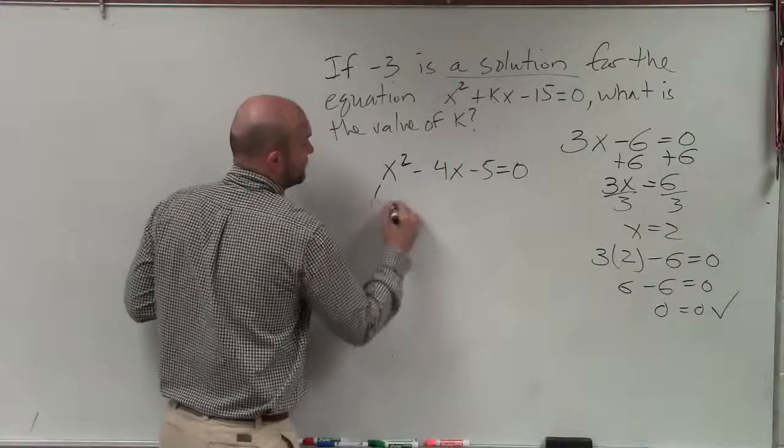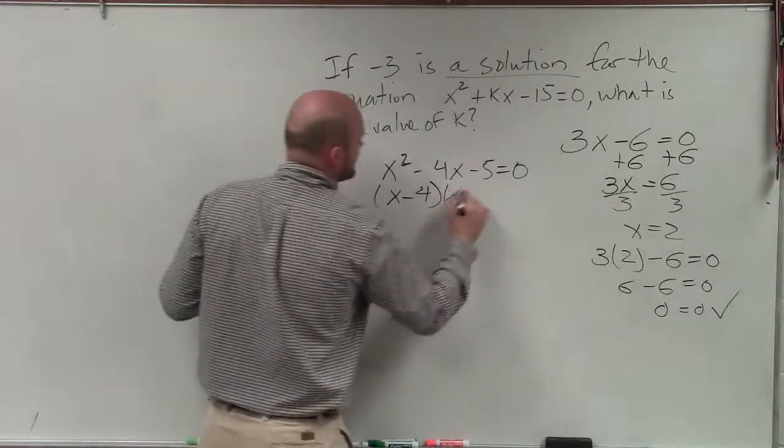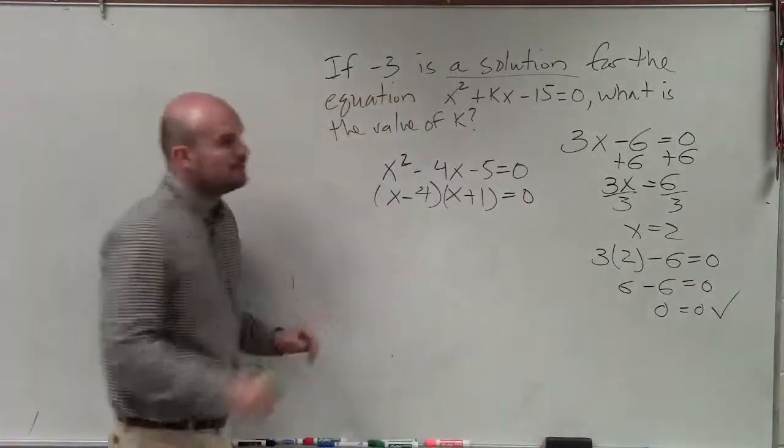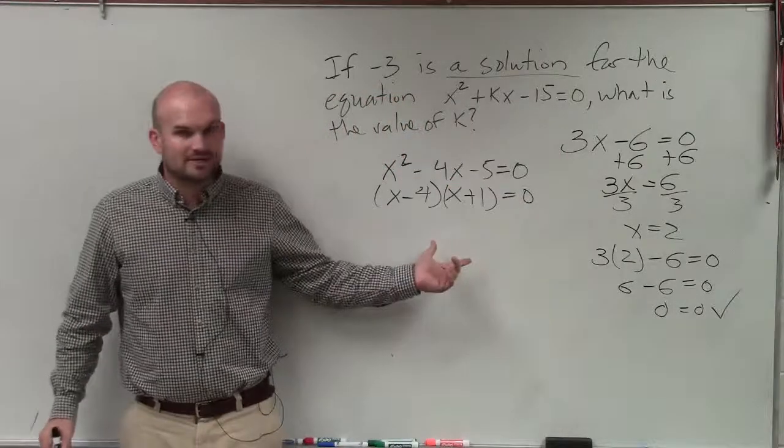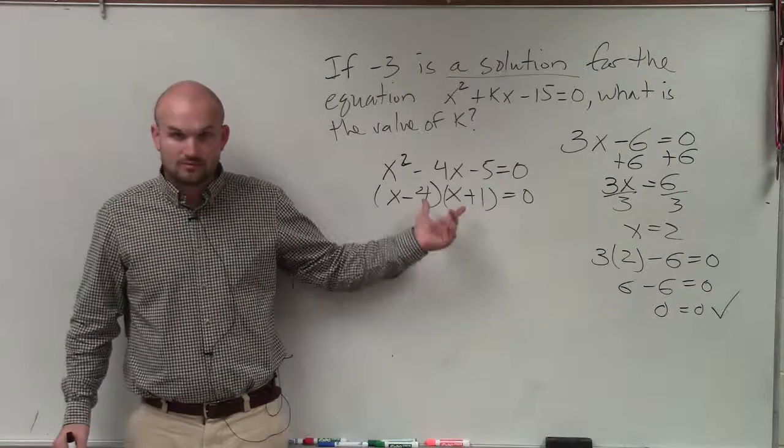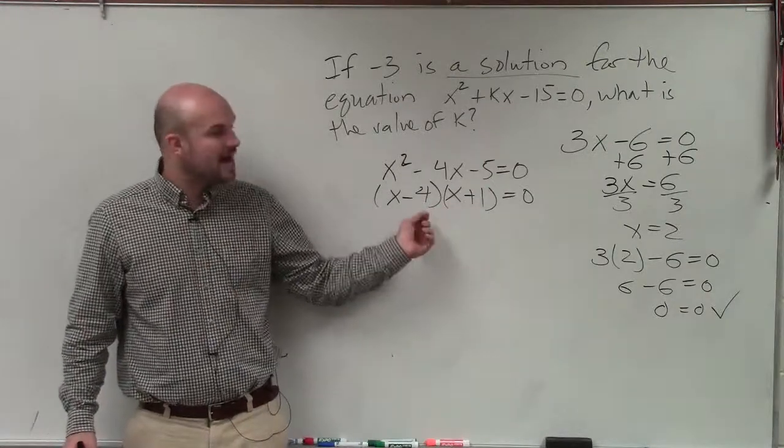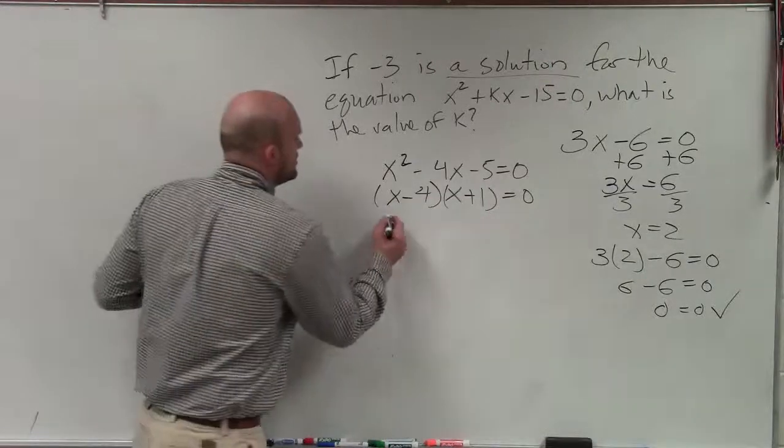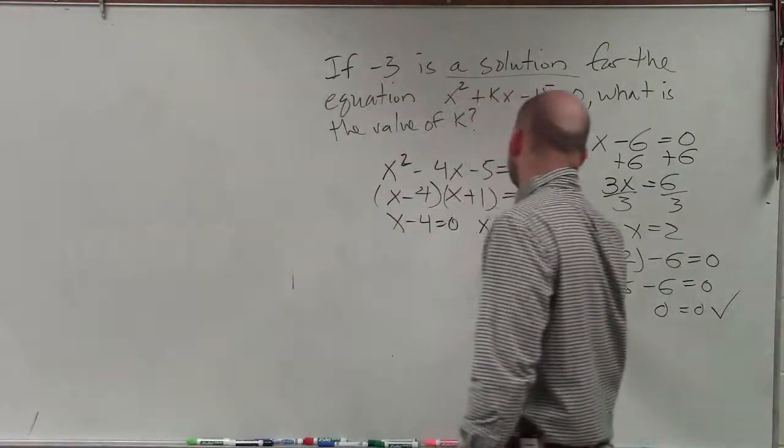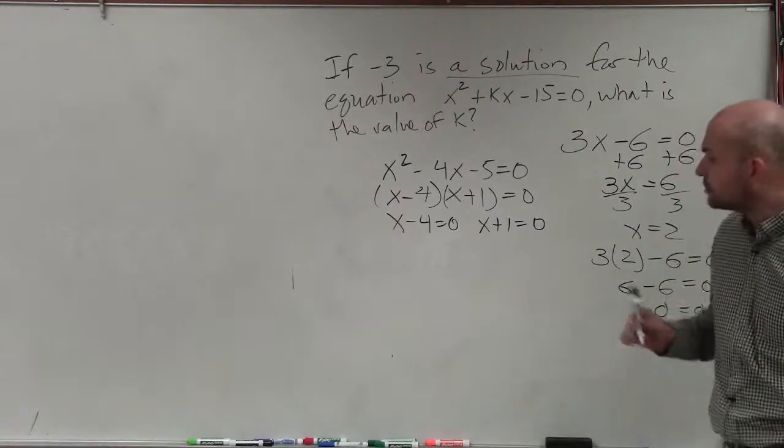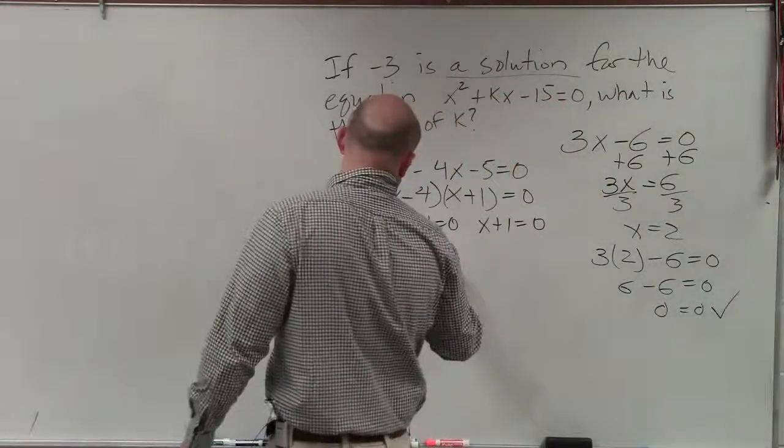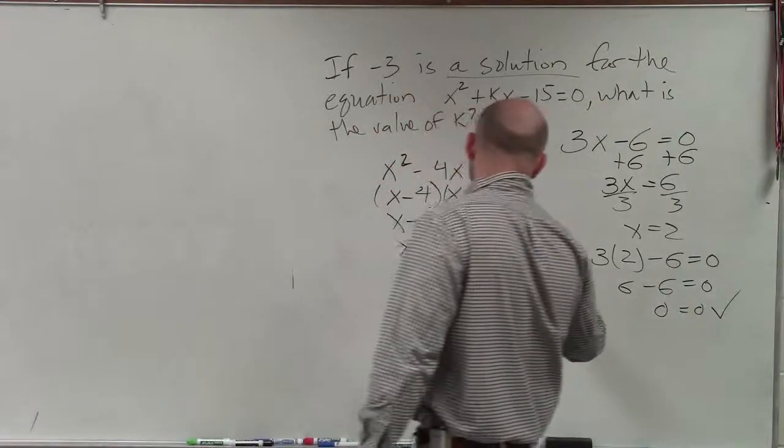So we had to learn how to factor, which again, we'll go over in this course. And the reason why factoring was so nice is because when we factor something, we write it as a product of its factors, right? Write it as a product of its factors. Well, now I have two numbers or two expressions that multiply to give me 0. So then what I can use is what we call the zero product rule. And by using the zero product rule, I now have two linear equations I can solve for to find the solutions.